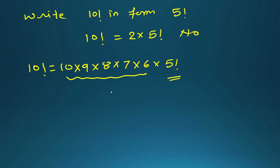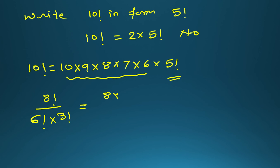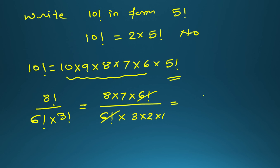An important NCERT question: find 8! ÷ (6! × 3!). Always try to reduce the biggest factorial first. Here 8! = 8 × 7 × 6!, so writing it out: (8 × 7 × 6!) ÷ (6! × 3 × 2 × 1). The 6! cancels, leaving 8 × 7 ÷ 6. Simplifying: 8 ÷ 2 = 4, so 4 × 7 = 28 ÷ 3, giving 28/3 as the answer.